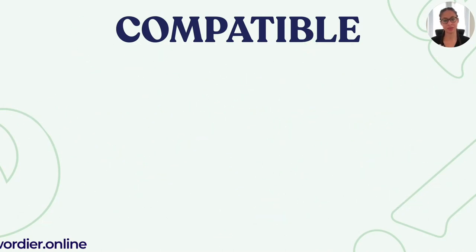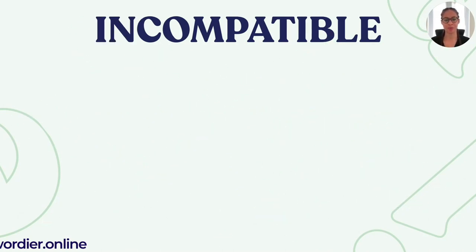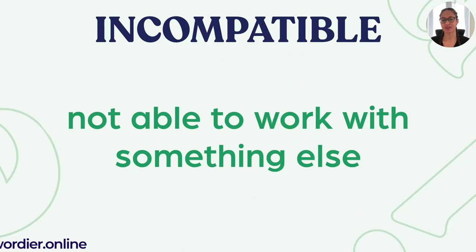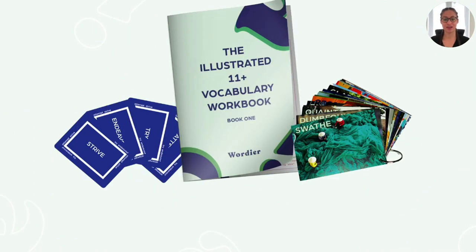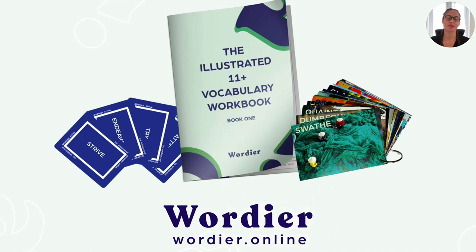You can add the prefix 'in-' to make the antonym: incompatible — meaning not able to work with something else, like the app not working with the tablet. They can work on their own, but not together. Those are our five words — write them down and revise them. If you want more vocabulary resources with images and fun ways to revise, visit wordier.online for all your vocabulary needs. See you in the next video!